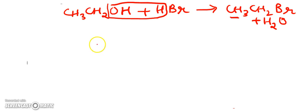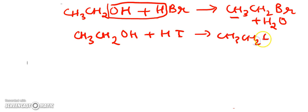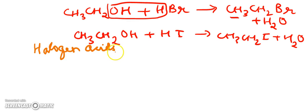Similarly, to prepare an iodoalkane, you take ethanol and react it with hydroiodic acid. Ethyl iodide is formed along with a water molecule. So we have understood the formation of haloalkanes from alcohols by the action of halogen acids.